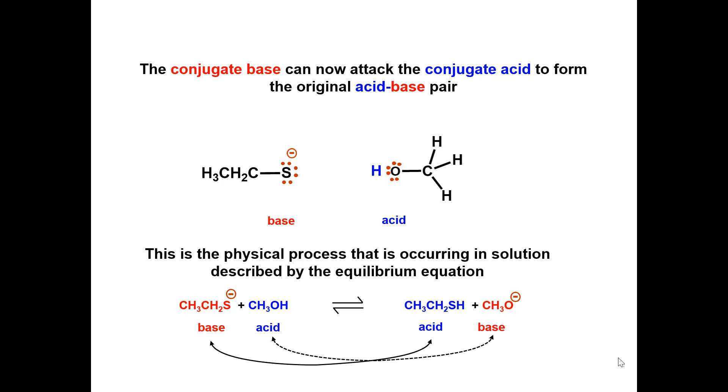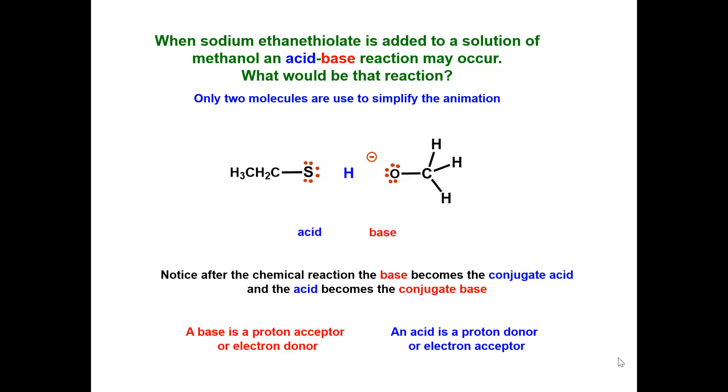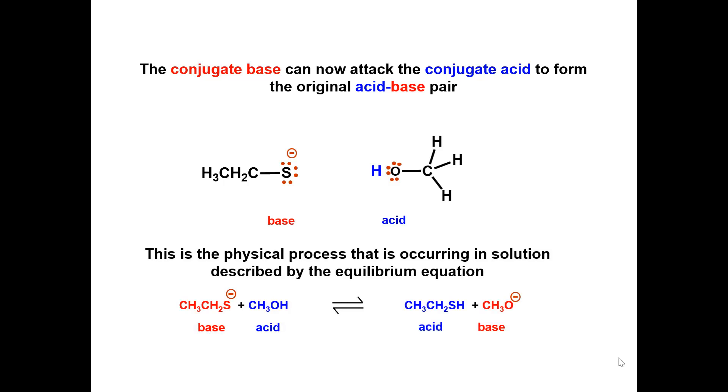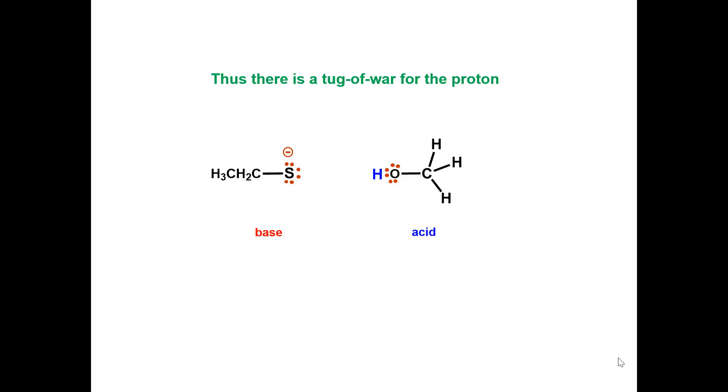The base, the thylate ion, reacts with the acid. The base accepts the hydrogen and the acid donates the hydrogen. And then on the other side of the equilibrium, the base has now become an acid and the acid has now become the base. So it is the bases on either side of the equilibrium that are fighting for the proton. So there is a tug of war for the proton.